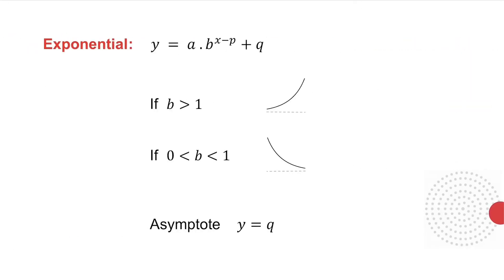With the exponential, the general equation is y equals a times b to the x minus p, plus q. If b is greater than 1, the exponential goes up, and if b lies between 0 and 1, it goes down. The asymptote comes from the constant term, so the asymptote is y equals q.